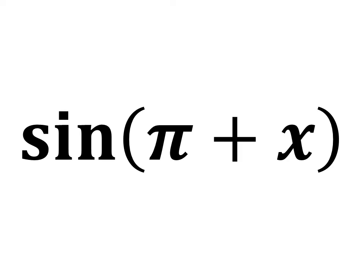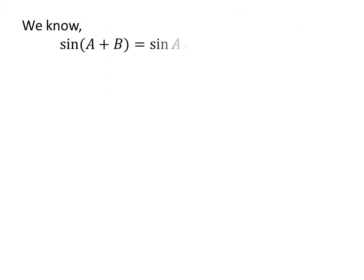In this video, we will learn to find the value of sine of pi plus x. As we know, the trigonometry identity sine of a plus b is equal to sine of a times cosine of b plus sine of b times cosine of a.